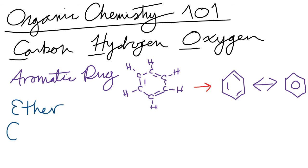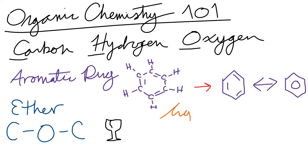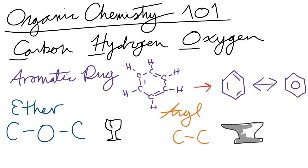Two other important bonds to know are ether bonds, which is a carbon bound to an oxygen which is bound to another carbon. These are relatively weak and fragile bonds that can be easily broken. The other type are aryl bonds, which is just a carbon bonded to another carbon. These are much stronger and difficult to break.